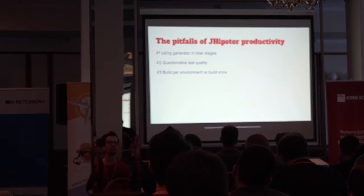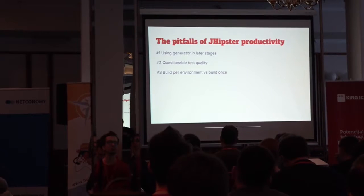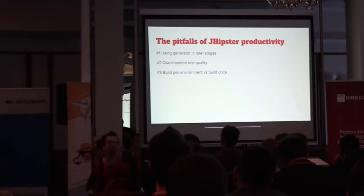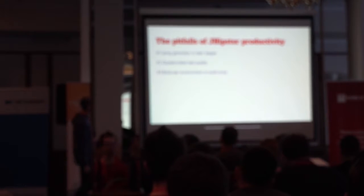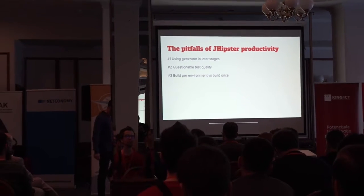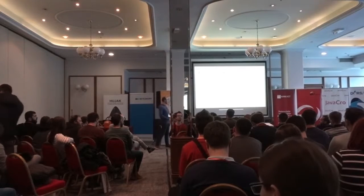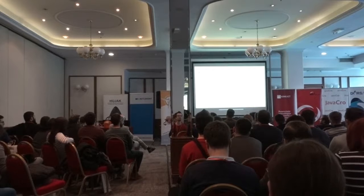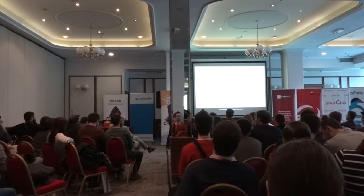But not everything is shiny — there are some pitfalls of this productivity. Not only does JHipster allow you to generate your application, you can use the JHipster generator in later stages. Especially if you know how your entity relationship model will look like up front, you can use it to create your entities. But I would recommend using that kind of generation only if you know up front how your database model will look like. If you want your DB model to evolve as you go, then maybe you should not use the JHipster generator in later stages because you will need to adjust your code, and the tool should be helping us, not the other way around.